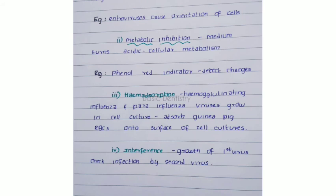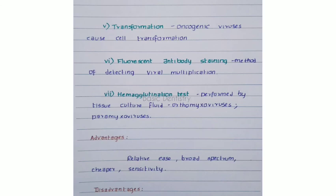The third detection method is hemagglutination, where influenza and parainfluenza viruses growing in cell culture adsorb guinea pig red blood cells onto the surface of the cell culture, indicating viral growth. The fourth is interference, where the first inoculated virus interferes with infection by a second virus. The fifth is transformation, where oncogenic viruses cause cell transformation, indicating viral growth in the culture medium.